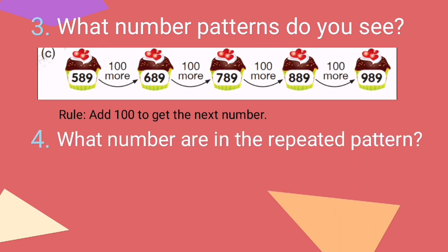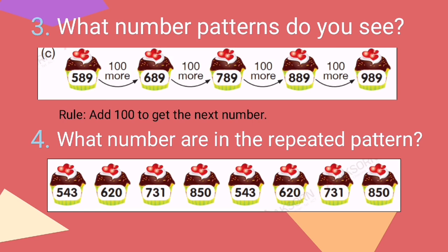For number 4, what numbers are in the repeated pattern? We're going to identify which numbers are repeated. We have 543, 620, 731, and 850. So the next number will become 543 again, then 620, 731, and then 850.